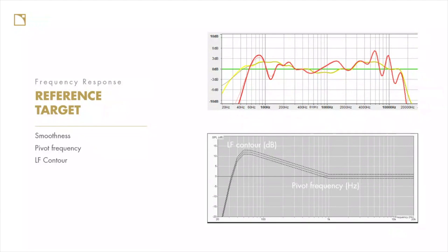Let's talk about our reference target. We might want to think about the smoothness of the response — looking at ripples and variation in the top graph. We might describe problems in our measurement in terms of smoothness. The second thing is the size of the low-frequency contour, measured in dB and its pivot frequency. I prefer the pivot frequency closer to 500 Hz; some people prefer 800 Hz, some 300 Hz. We describe where we want that pivot from the flat response in the high end to the increase in low-frequency energy at the low end, and how many dB bigger the low end is than our plateau in the mid and high.